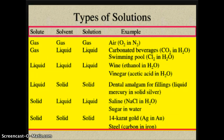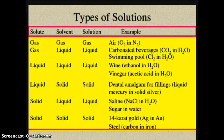For liquid into liquid, things like wine or vinegar: wine has ethanol, an alcohol, based in a water solution, and vinegar has acetic acid in a water solution. Liquid into solid, we have things like dental amalgam for fillings in your teeth — liquid mercury or solid silver — though they don't use this as often as they once did. Solid into liquid: saline solution, NaCl, or sugar in water. Solid into solid: 14-karat gold is a combination of gold and silver, and steel is carbon in iron.